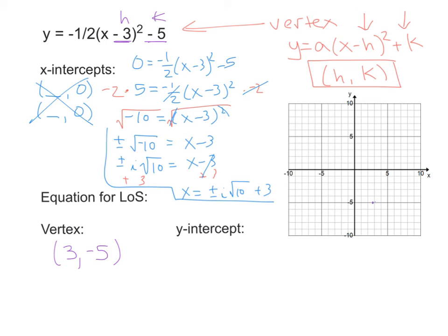Since we know the vertex is at x equals 3, our line of symmetry is x equals 3 — that x value goes right there. Lastly, we find our y-intercept by putting 0 in for x, using trace, and we get negative 9.5. So our y-intercept is at negative 9.5. Now we're able to graph from the vertex through that point, and then draw a congruent branch on the other side.